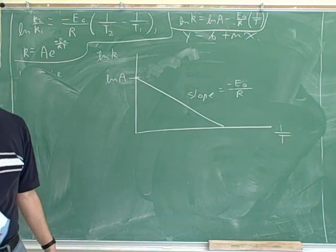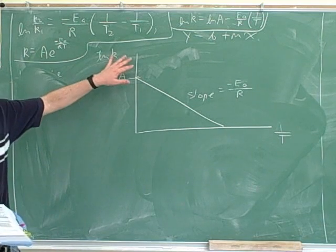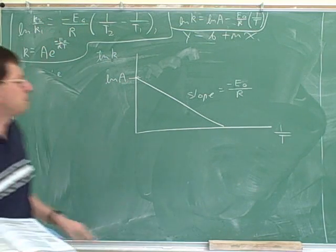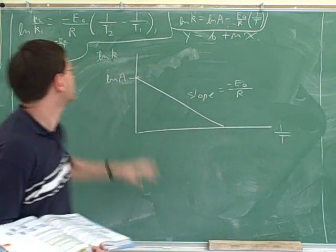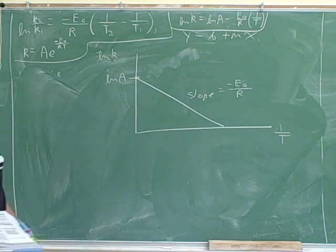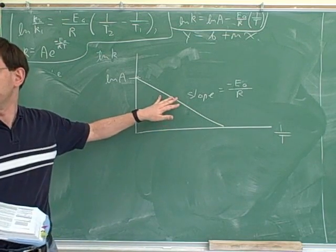For example, remember the slope is the rise over the run. So you would have to subtract the two ln Ks. Well, we subtract the two ln Ks to get this. And the run would be subtracting the two reciprocal Ts, which we're basically doing over here. So this is just an automated way to figure out the slope of this line. It doesn't require you to graph it and think about the slope every time.